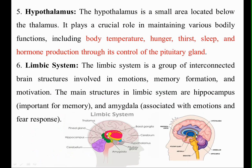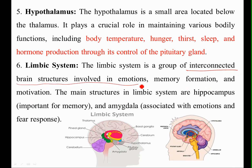The hypothalamus is a small area located below the thalamus. It plays a crucial role in maintaining various bodily functions like body temperature, blood pressure, hunger, thirst, sleep, hormone production, and control of the pituitary gland. The limbic system is a group of interconnected brain structures involved in emotion, memory formation, and motivation. Its main structures are the hippocampus and amygdala, associated with emotions and fear response.